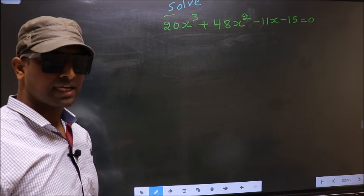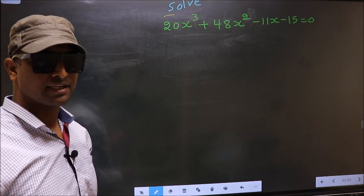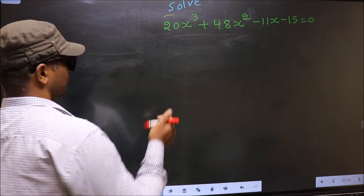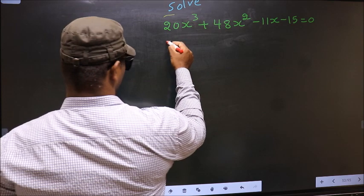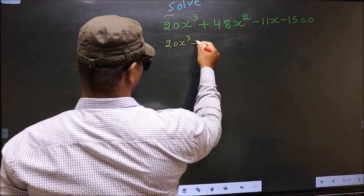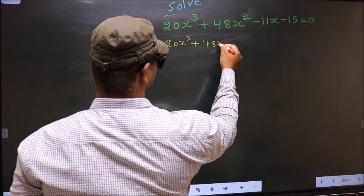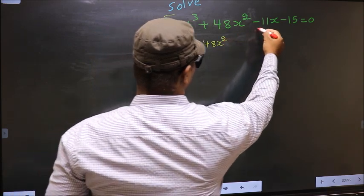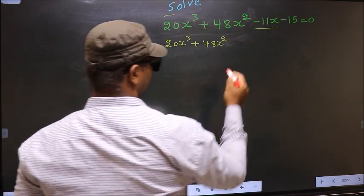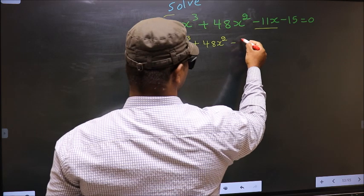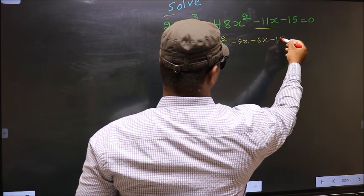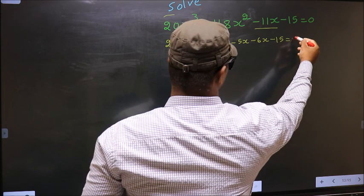For that we have to change the x term — specifically the middle term. 20x³ + 48x². In place of -11x, now I write -5x - 6x - 15 = 0.